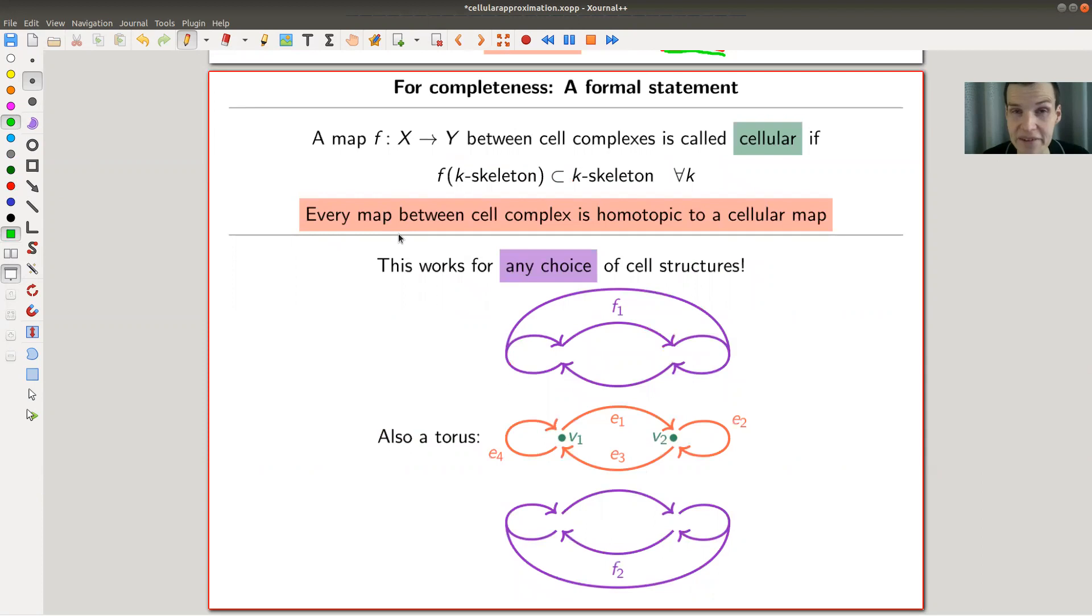So here comes the crazy cellular approximation theorem. A map between cell complexes—so you choose your cell complex, which means you also choose your cell structure, and a map between them—the map X to Y is called cellular if the k-skeleton always ends up in the k-skeleton for all k.